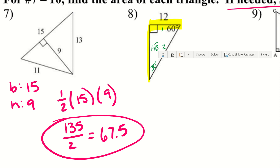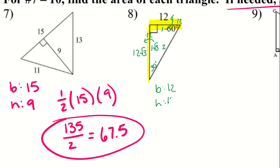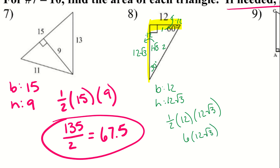We have 12 with the ratio of 1, so from 1 to 12 we multiply by 12. Therefore the 1-root-3 also gets multiplied by 12, so the height of the triangle is 12 root 3. The base is 12 and the height is 12 root 3. So: one-half times 12 times 12 root 3 — doing one-half times 12 gives 6, then 6 times 12 root 3 gives 72 root 3. We leave it in radical form.